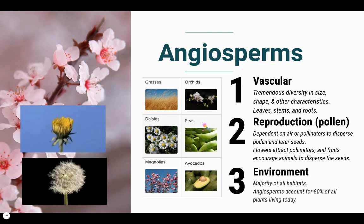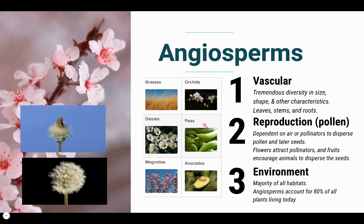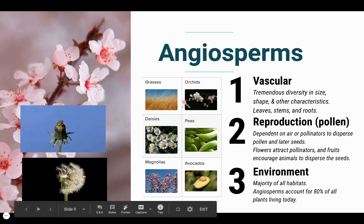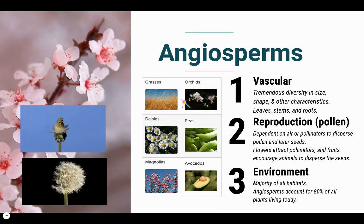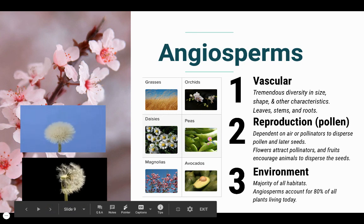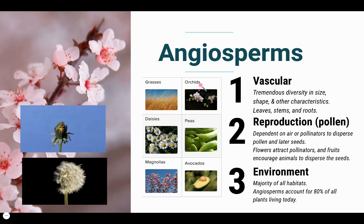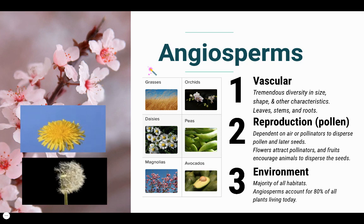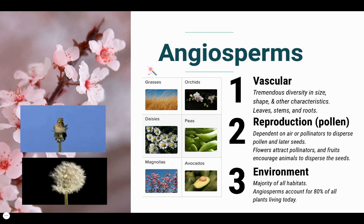Because of their wide diversity in structures, angiosperms can be found in a majority of habitats. Angiosperms actually account for 80% of all living plants today. We often think about fruits like avocados and peas, the flower part of plants, and grasses — all of these are angiosperms. To recap, all four major plant groups evolved from the ancestor green algae, accumulating adaptations over time that allowed them to thrive on land.